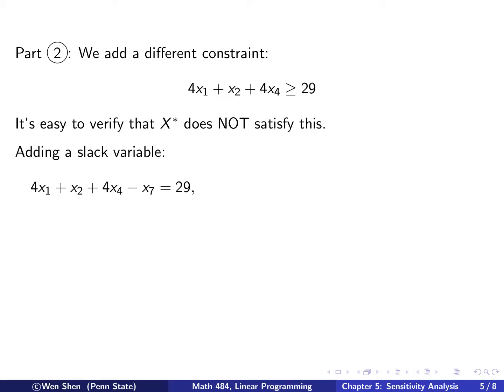Let's add a slack variable. And since it's a bigger than equal sign, so I must have minus X7 equal 29. That's a slack variable. And then if I wish to use this as a basic variable, then I want it to be a plus sign. And then I just multiply negative 1 everywhere to get this. And I call this equation B. And I add this to the LP problem.